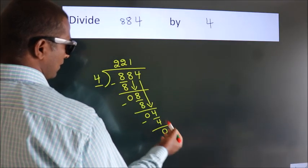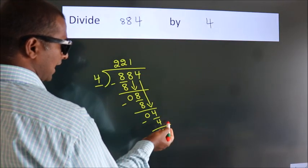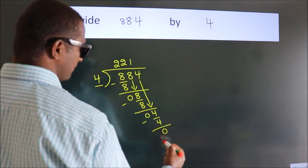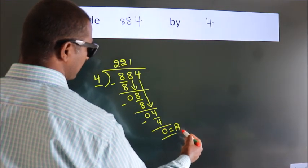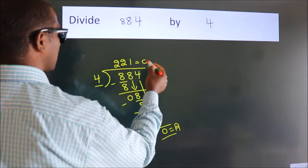After this, no more numbers to bring down. So, we stop here. This is our remainder. This is our quotient.